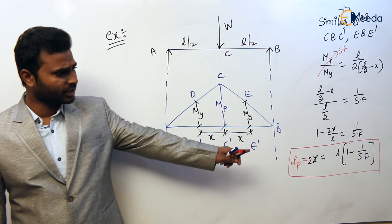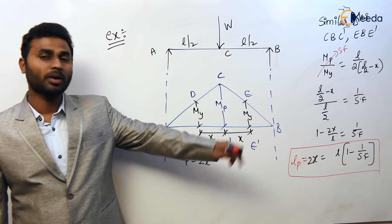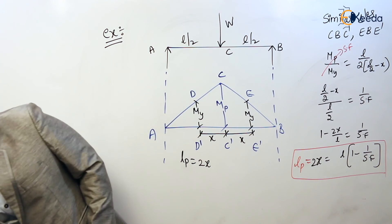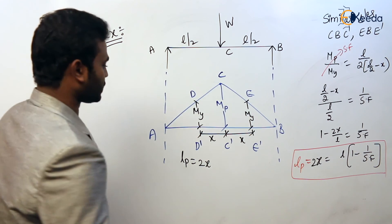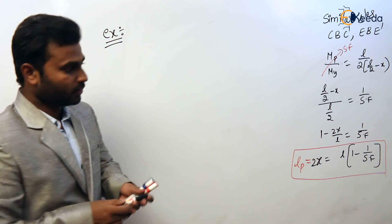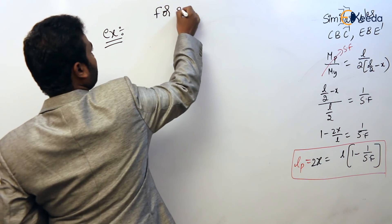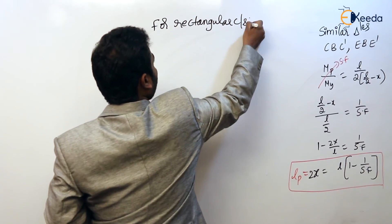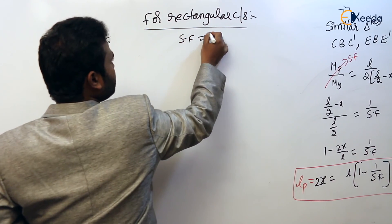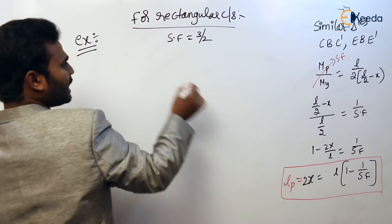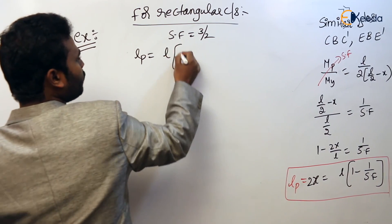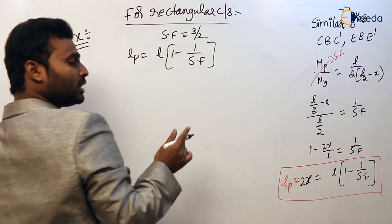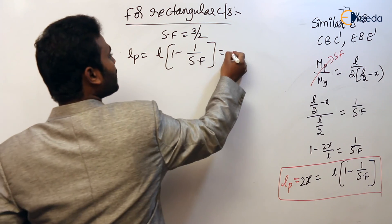So LP = 2x = L × (1 − 1/shape factor). Now let us apply this for various cross-sections. For the rectangular cross section, the shape factor is 3/2. Substituting: LP = L × (1 − 1/(3/2)) = L × (1 − 2/3) = L/3.